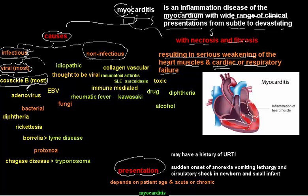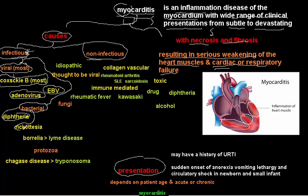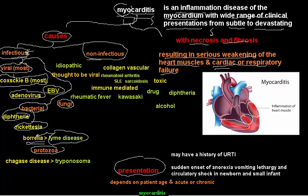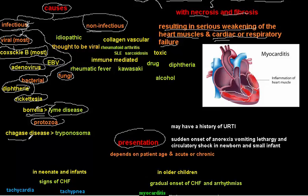Other viruses that can cause myocarditis include adenovirus and Epstein-Barr virus, but remember Coxsackie B most importantly. Bacteria can also cause myocarditis — for example, diphtheria, Rickettsia, and Borrelia bacteria in Lyme disease, which can sometimes cause myocarditis.